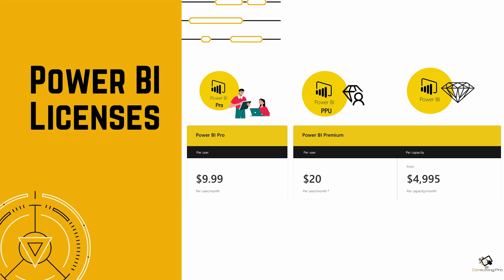First of all, you should know that Microsoft offers five different kinds of licenses. Out of those, two are free and one is embedded. However, the main three important types are Microsoft Power BI Pro, PPU, and Power BI Premium. PPU stands for Power BI Premium Per User, and it is different from Power BI Premium — you will get to know why in the upcoming slides.